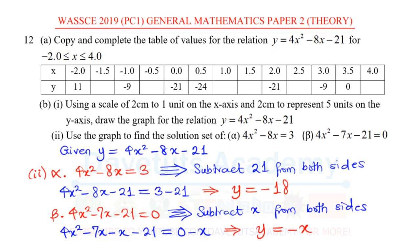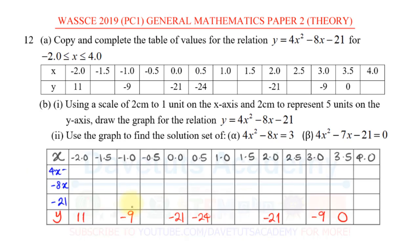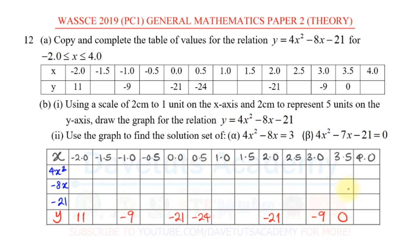Having cleared this, I can now go ahead to copy and complete the table of values and then plot my graph. This is a breakdown of the table we were initially given, now reflecting all the inputs of the equation: 4x², -8x, and -21. What we are going to do is put all of these entries into the table. I want to confirm with the first case so you can see that what was given and what we compute are the same.